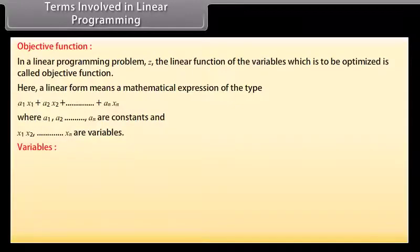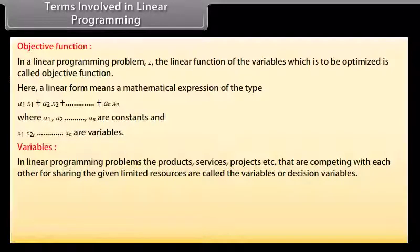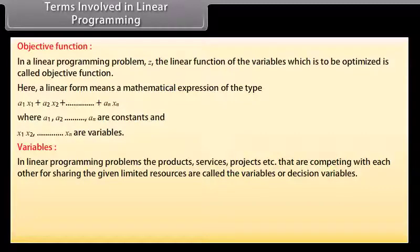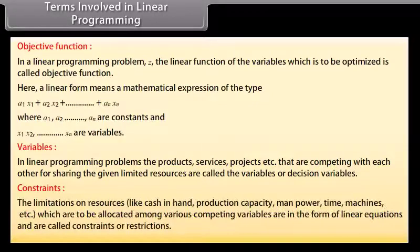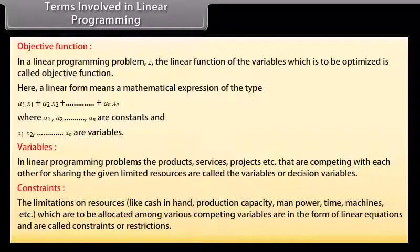Variables: In linear programming problems, the products, services, projects, etc., that are competing with each other for sharing the given limited resources are called the variables or decision variables. Constraints: The limitations on resources like cash in hand, production capacity, manpower, time, machines, etc., which are to be allocated among various competing variables, are in the form of linear equations and are called constraints or restrictions.